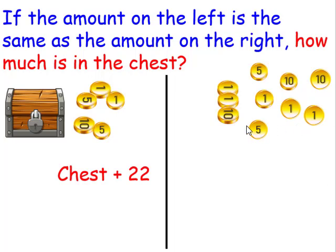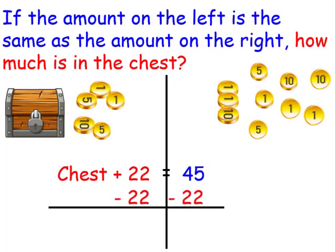On my right side I can see that I have three 10's, that's 30, two 5's which is another 10, which is 40, and then 1 plus 2 plus 3 plus 4 plus 5, which gives me a total of 45. These two amounts are supposed to be the same, so we can say that they are equal to each other. Now we'll subtract 22 from both sides. This will leave me with the chest having 23.